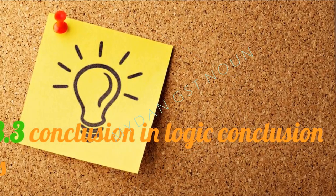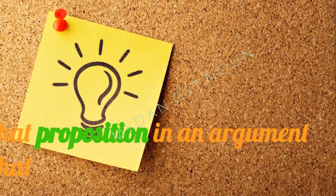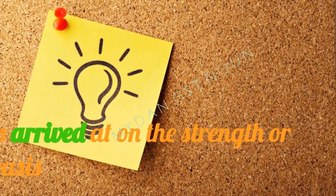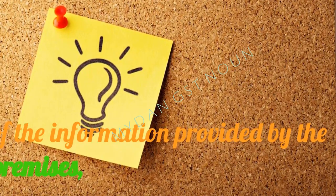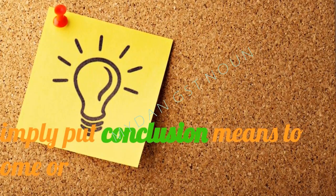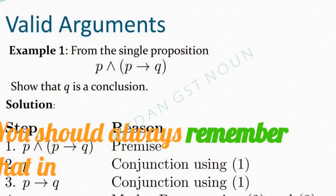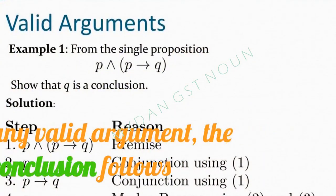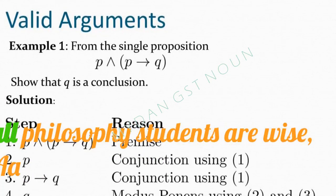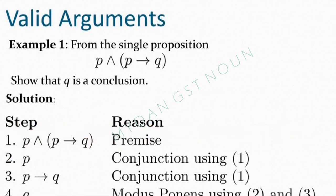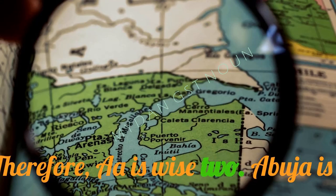3.3 Conclusion. In logic, conclusion is that proposition in an argument that is arrived at on the strength or basis of the information provided by the premises. Simply put, conclusion means to come or bring to an end. In any valid argument, the conclusion follows from the premises. For instance: 1. 'All philosophy students are wise. Aina is a philosophy student, therefore Aina is wise.'